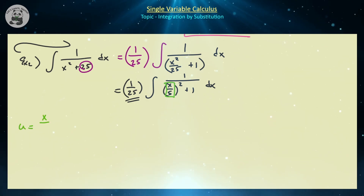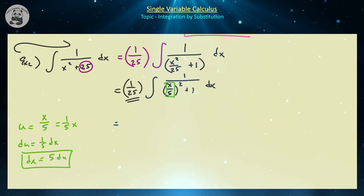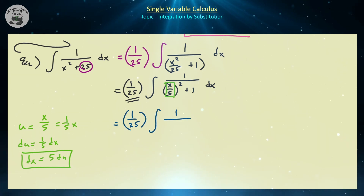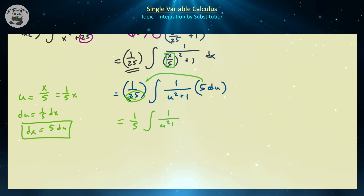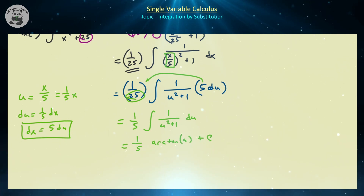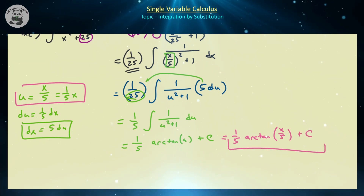If u equals x over 5, then du equals one-fifth dx, so dx equals 5 du. Substituting: one-twenty-fifth times the integral of 1 over u² plus 1 times 5 du. Bringing the 5 out cancels one factor of 5 from the 25, giving one-fifth times the integral of 1 over u² plus 1 du. Using the arctangent identity, this equals one-fifth times arctan(u) plus c, and switching back: one-fifth times arctan(x/5) plus c.